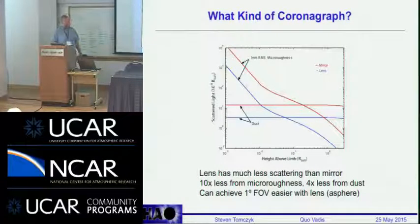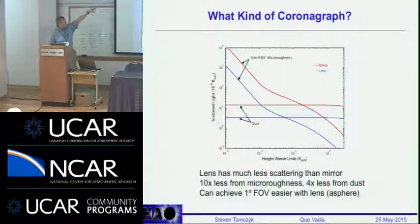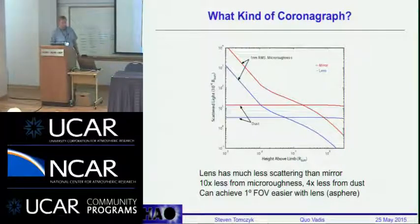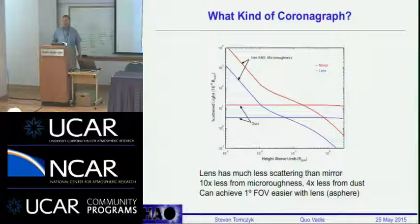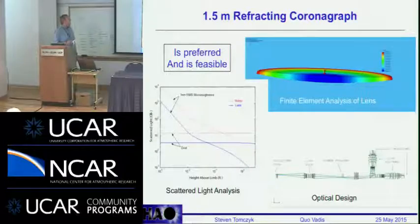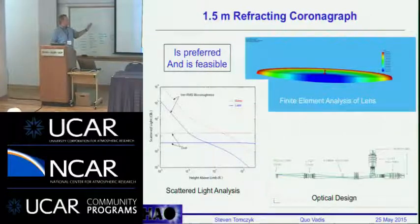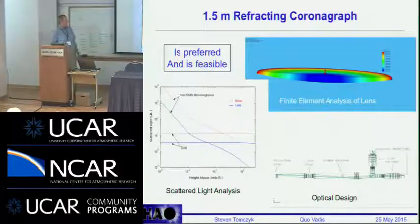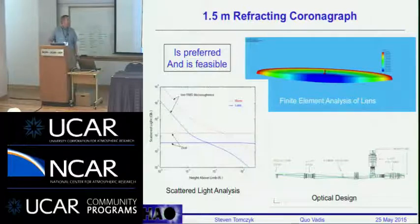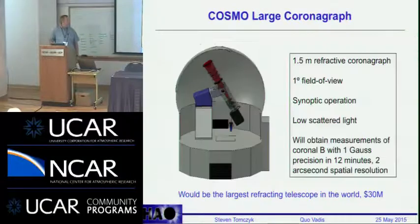It turns out a lens works much better in terms of scattering than a mirror — a lens scatters about 10 times less light from micro-roughness and about a factor of four from the same dust distribution. So we want a refracting coronagraph, but we need large aperture. We believe we can build a 1.5-meter refracting coronagraph — it's feasible. We've done engineering studies on flexure under gravity and scattering effects, have a complete optical design, and completed our preliminary design review last November. We're very confident in the engineering behind a 1.5-meter refractive coronagraph.